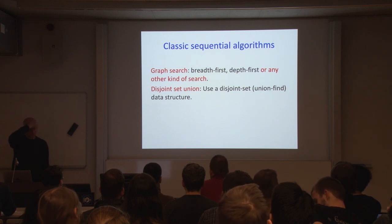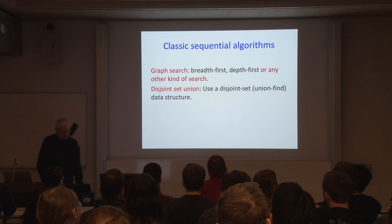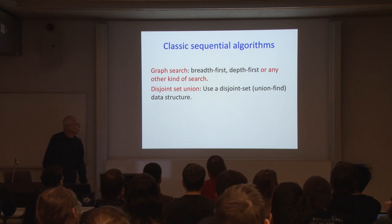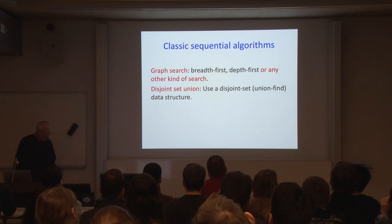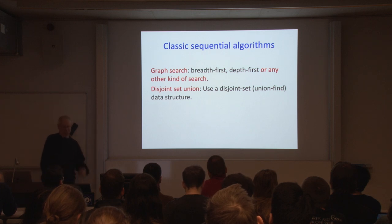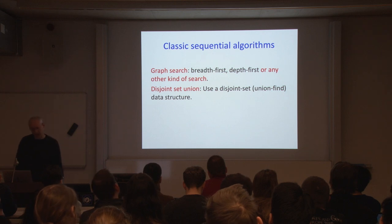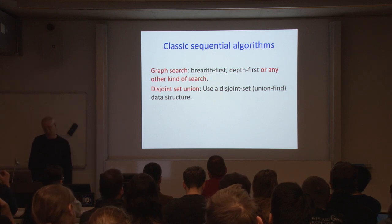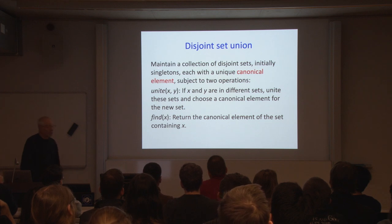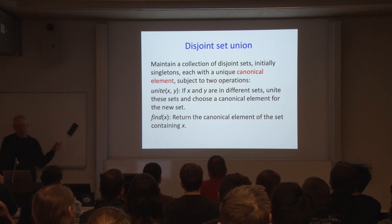Graph search will find the components in linear time. There is another, more data-structure-type solution, which is to use a disjoint set union data structure — sometimes called a union-find structure. The disjoint set union problem is to maintain a collection of disjoint sets, each initially a singleton and each having a unique canonical element, subject to two operations.